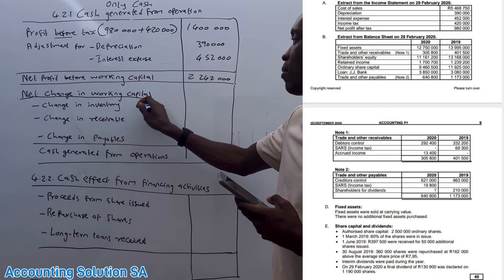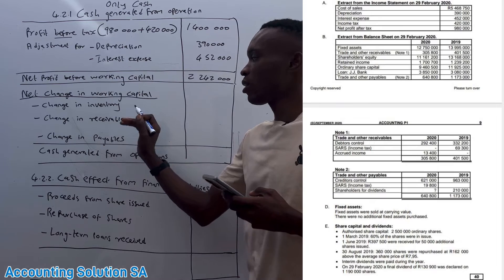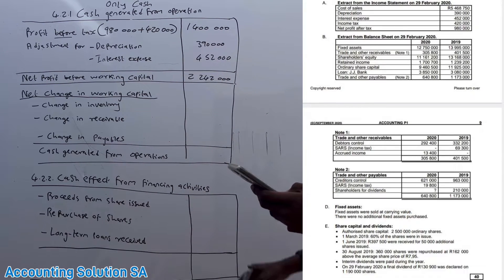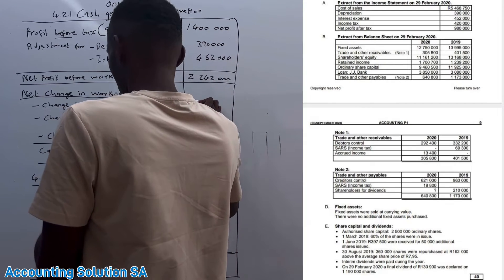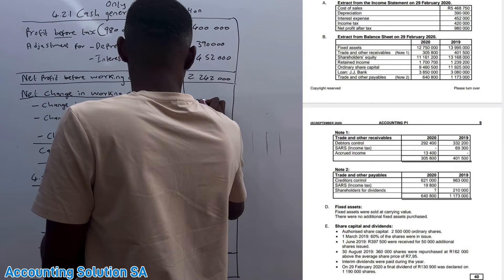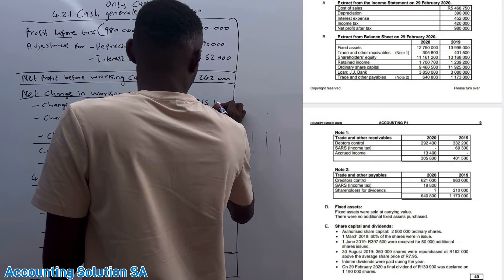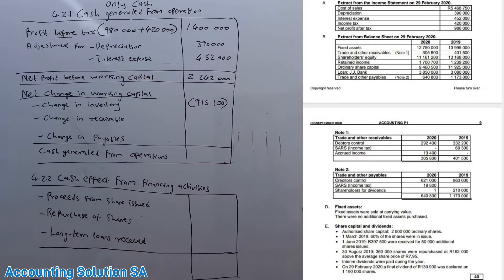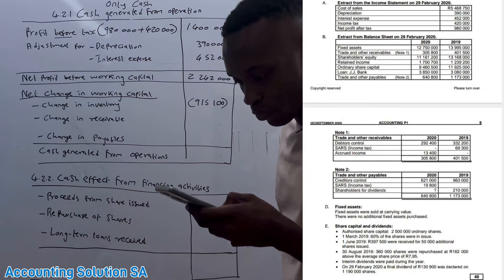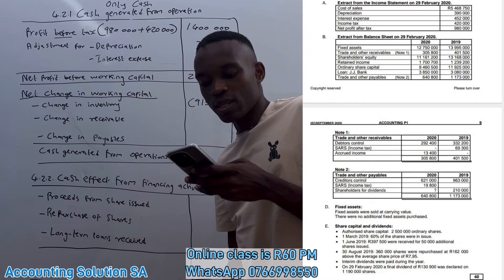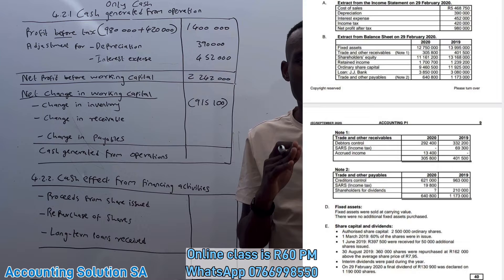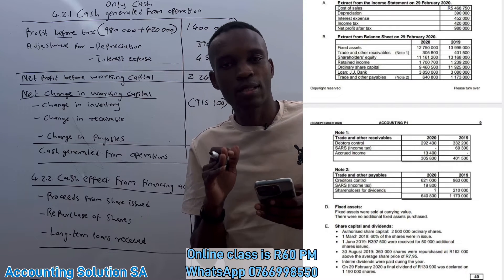Next we look at net change in working capital, which contains inventory, receivables, and payables. In this question, inventory was not in the question paper but was given in the answer book. Now we start with change in receivables — we check note number one for trade and other receivables.